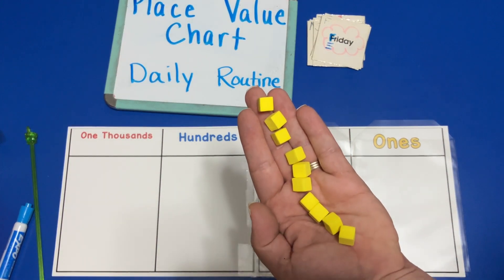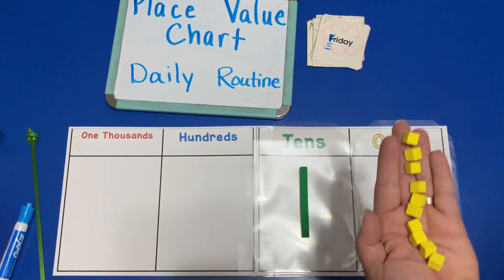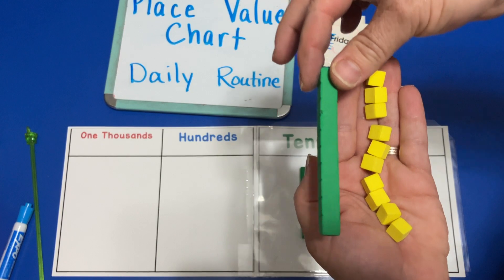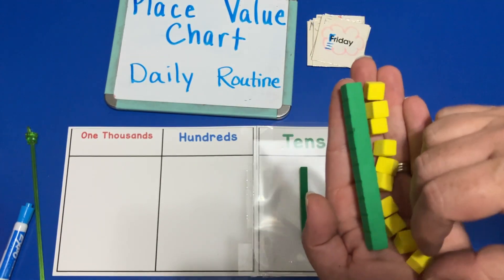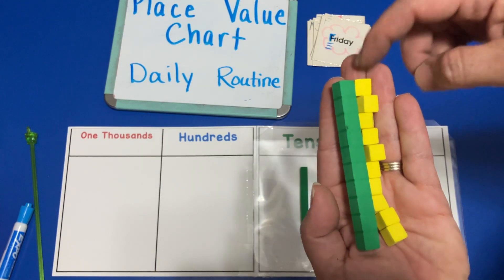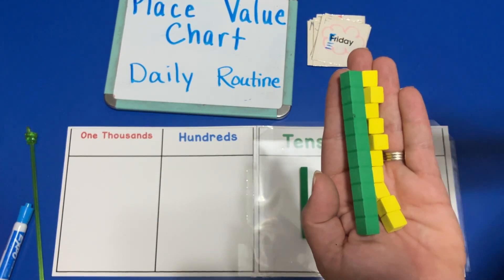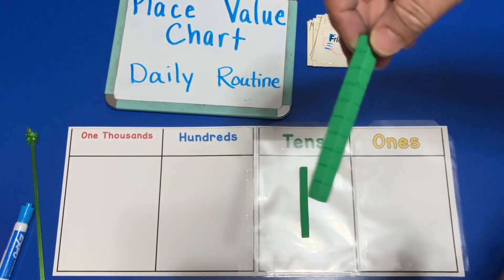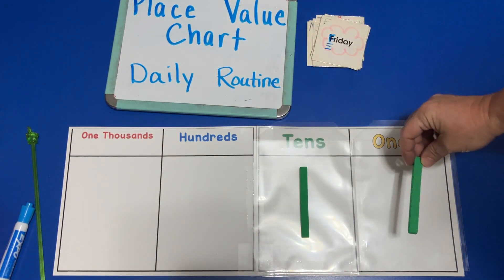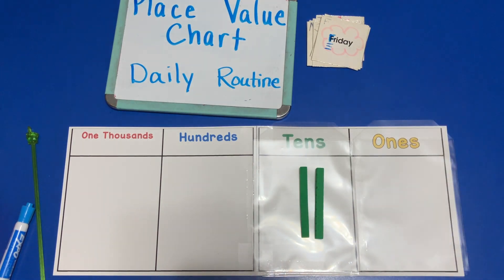We have ten units. Ten can't go in the ones place, so now we will need to exchange these ten units for a ten-long. We have ten units — that's the same as this ten-long, they have the same value. So instead of gluing these ones together to make a group, we can just exchange them for this ten-long. A ten-long can't go in the ones place — the ten-long has to go in the tens place.